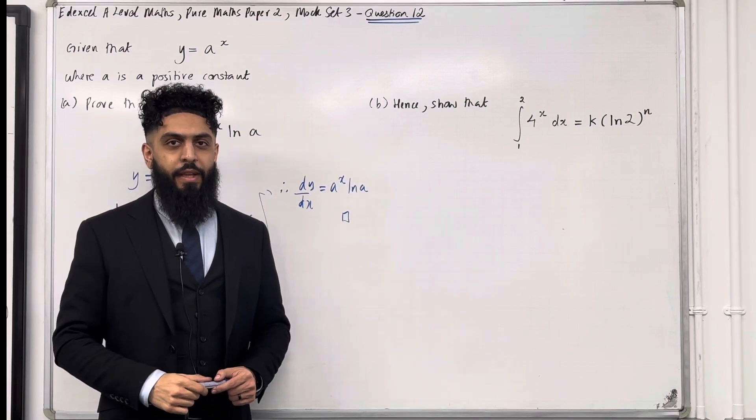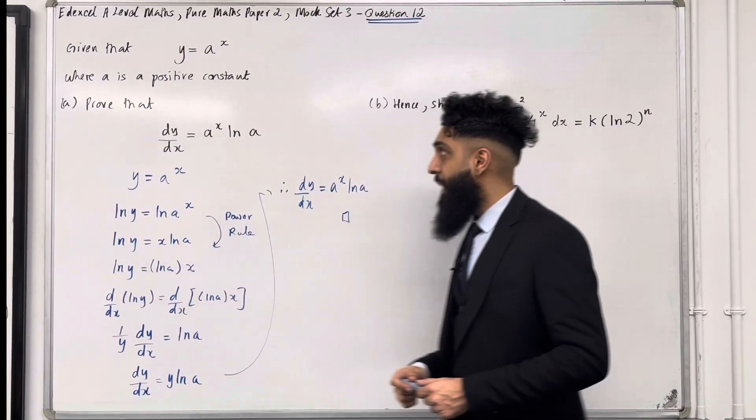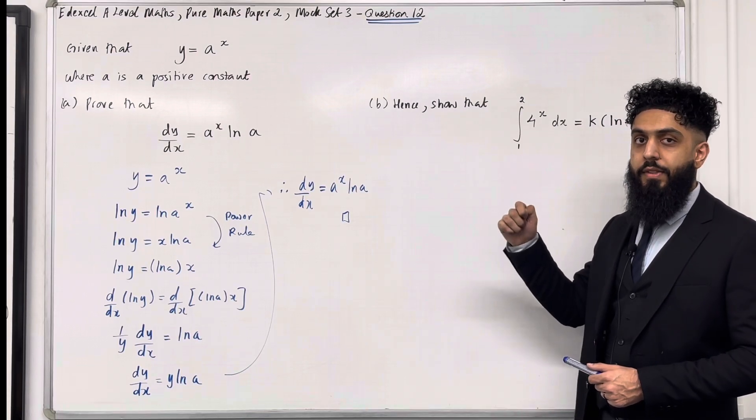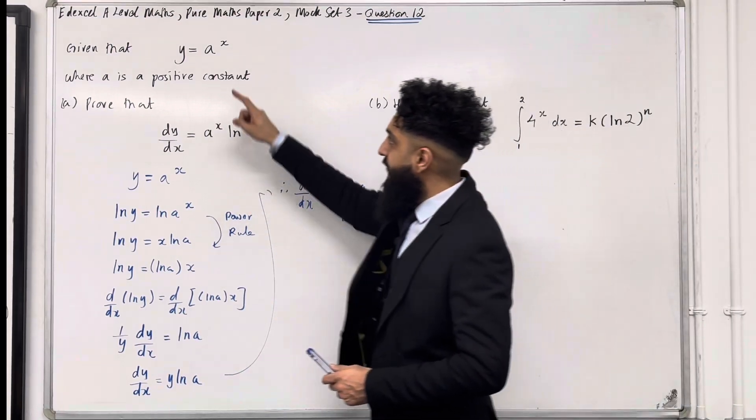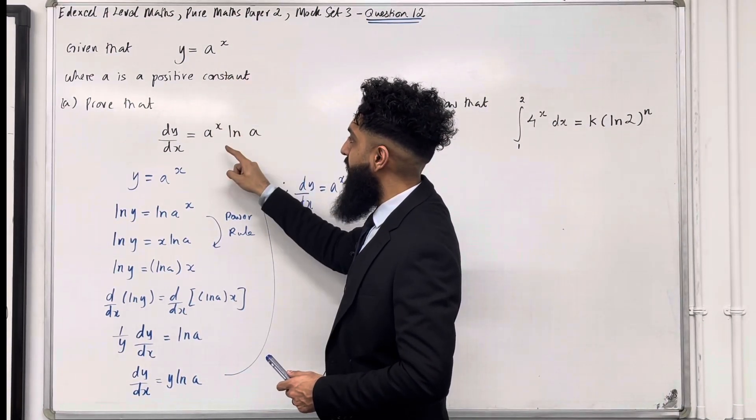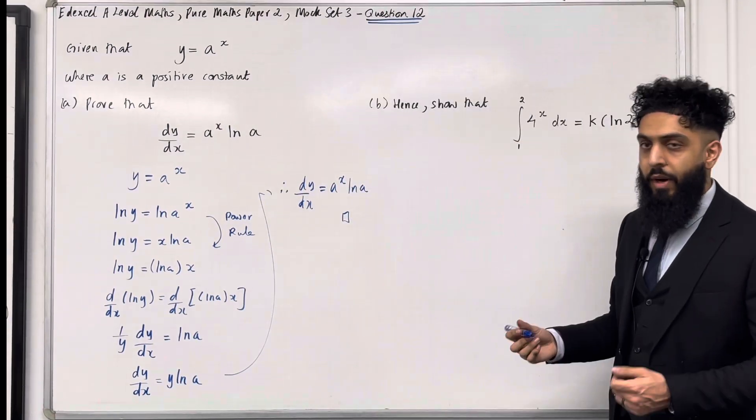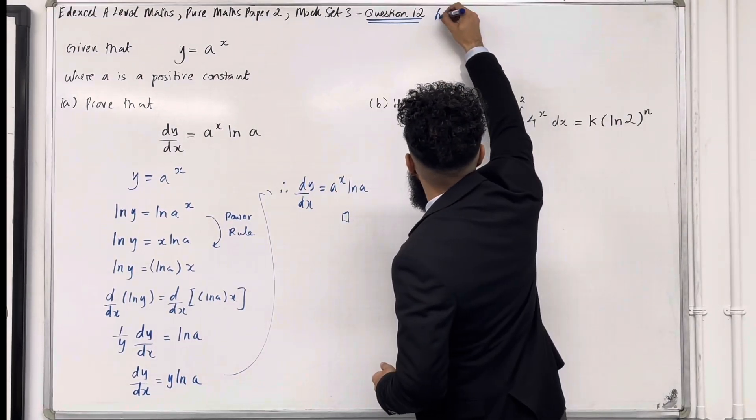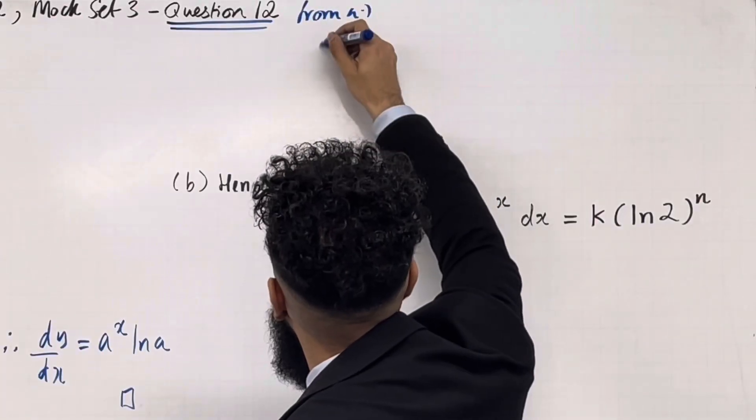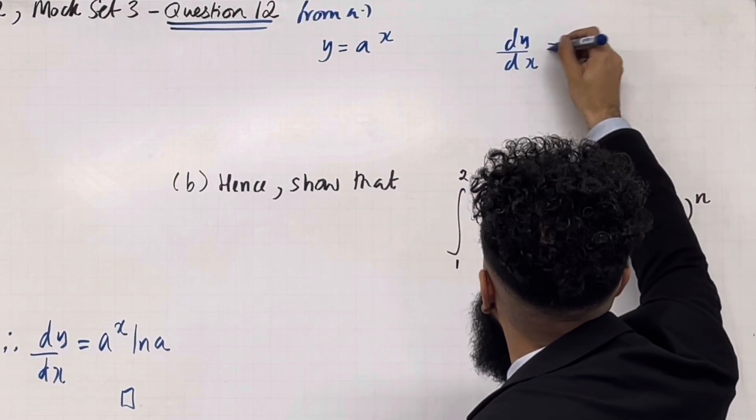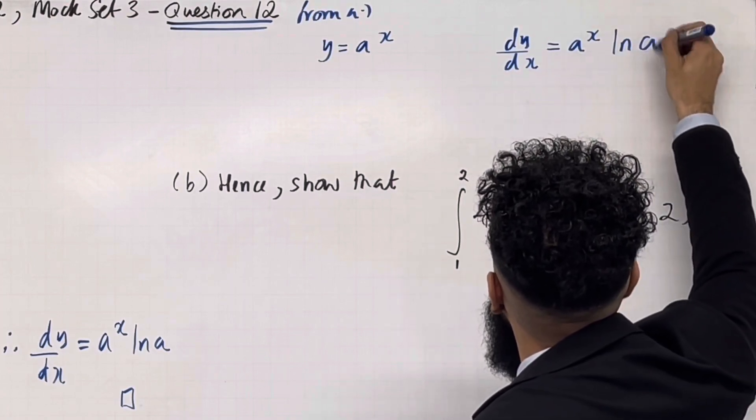Let's have a look at the solution to part b. Now in part b, it clearly says the word hence. This means that we have to refer back to our answer in part a. That is, if y is equal a to the power x, then dy over dx is equal a to the power x ln a. So from part a, we have that if y is equal a to the power x, then dy over dx is equal a to the power x ln a.